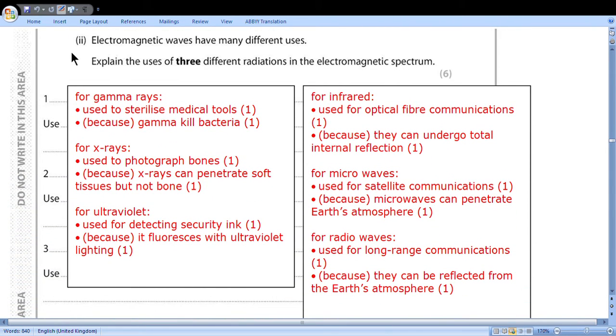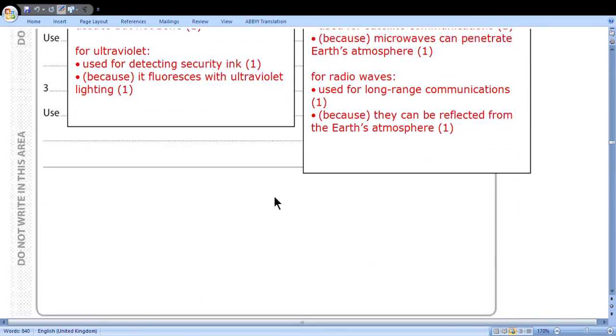Electromagnetic waves have many different uses. Explain the uses of 3 different radiations in the electromagnetic spectrum. 6 points. So you should choose 3 radiations, name them, use them, and explain why they are used. For example, gamma rays are used to sterilize medical tools because gamma kills bacteria. X-rays used to photograph bones because X-rays can penetrate soft tissue but not bone. Ultraviolet used for detecting security ink because it fluoresces with ultraviolet lighting. Or another combination: Infrared used for optical fiber communication because they can undergo total internal reflection. Microwaves used for satellite communication because they go through Earth's atmosphere and reach satellites. Radio waves used for long-range communication because they can be reflected from Earth's atmosphere.